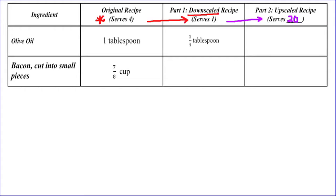The first thing we need to think about is when we are downscaling something — taking something that originally serves four and changing it so it serves one — which math operation would we use? Most people were able to identify that this is a division problem. We are dividing by four because the original recipe serves four people. If your original recipe served six or eight or whatever, this number would be different.